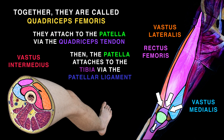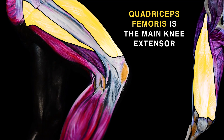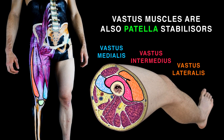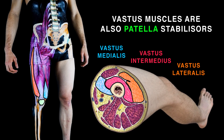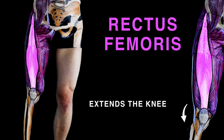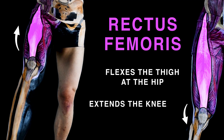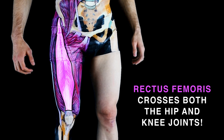By the patellar ligament to the tibia, the patella then attaches. Quadriceps femoris is the main knee extensor. Vastus muscles are also a patella stabilizer. Rectus femoris extends the knee and flexes the thigh at the hip — it crosses both the hip and knee joints.